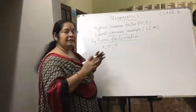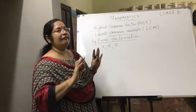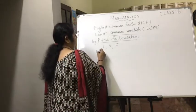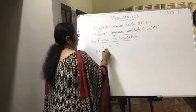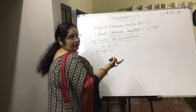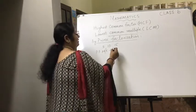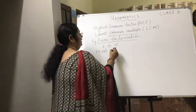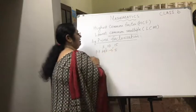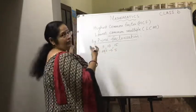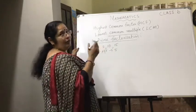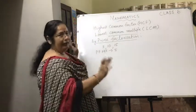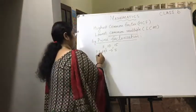The first step is to find the prime factorization of all three numbers. The prime factorization of 5 is simply 5, because it cannot be broken down further — 1 is not a prime number, so we do not write 1 here.